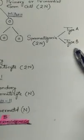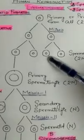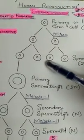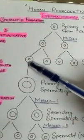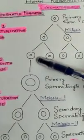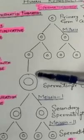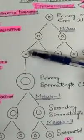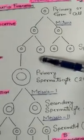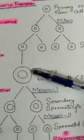Type B spermatogonia will enter the next phase — the growth phase. In this phase, spermatogonia will increase in size. You can see that this is the smaller cell and this is the larger cell. This phase is characterized by spermatocytogenesis, in which the diploid spermatogonium increases in size by the accumulation of nutritive materials.